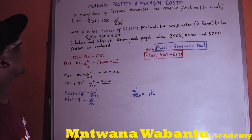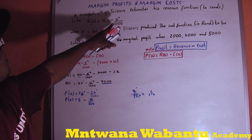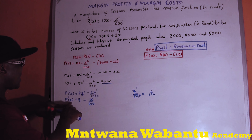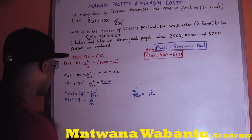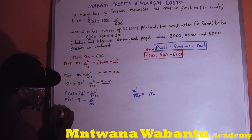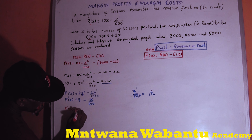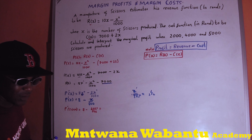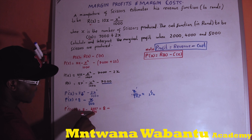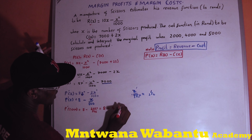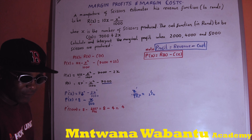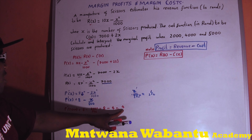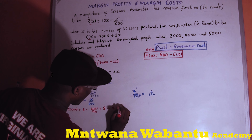So the marginal profit for a certain number of scissors — now let's evaluate when x equals 2000. We plug in: marginal profit of 2000 equals 8 minus 2000 over 500, which equals 8 minus 4, giving us 4. So when we produce 2000 scissors we make a marginal profit of $4.